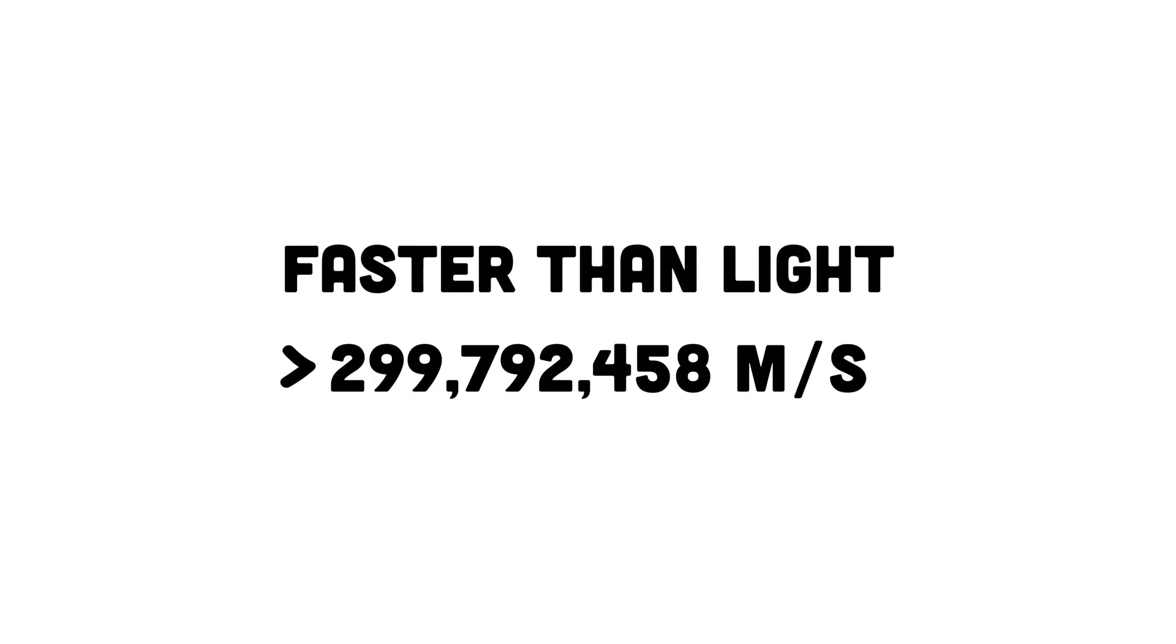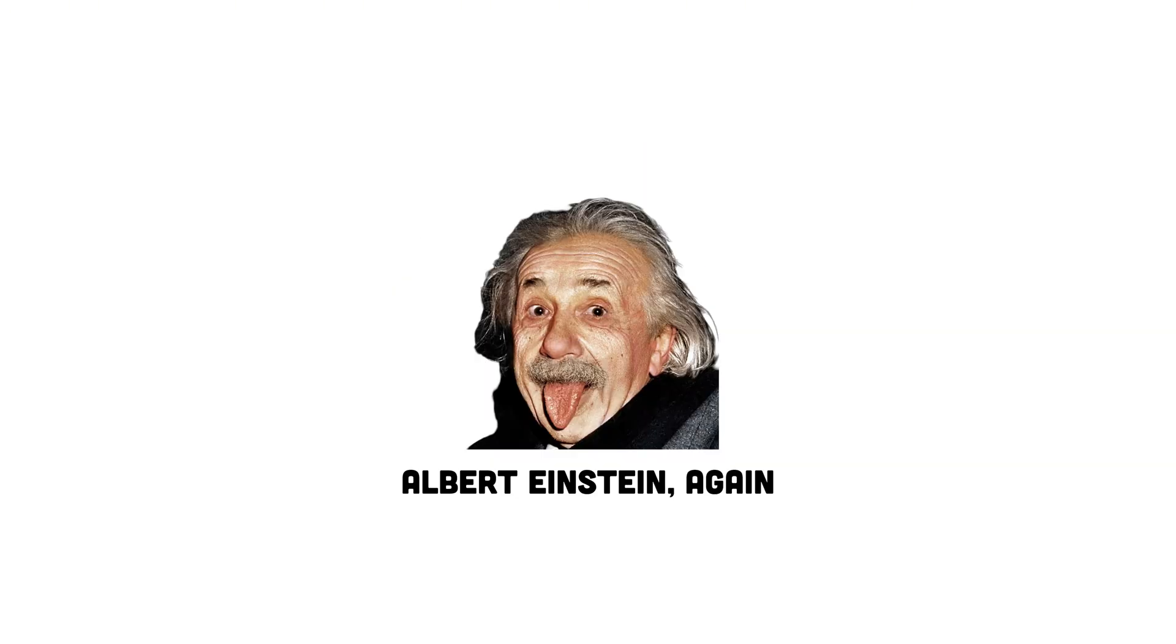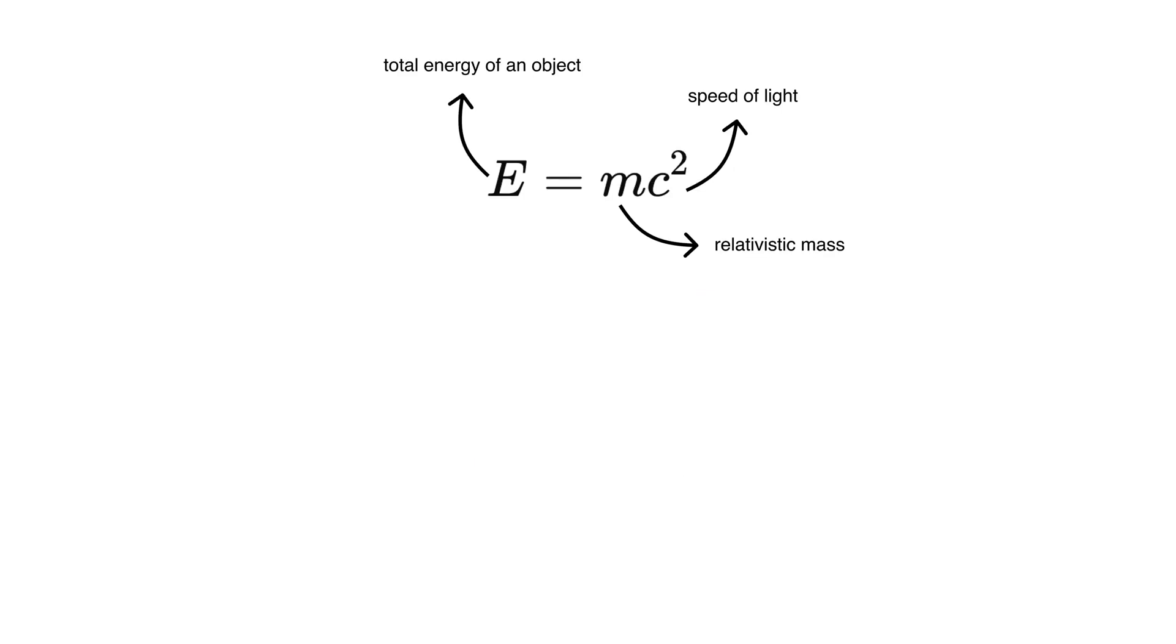What if, instead of just approaching the speed of light, we could actually surpass it? If we could somehow break this cosmic speed limit, we might enter a realm where the normal rules of time and space go completely out the window. Imagine a world where the lines between past, present, and future become blurred, allowing us to potentially jump around in time at will. But according to Einstein's theory of special relativity, nothing with mass can ever reach, let alone exceed the speed of light.